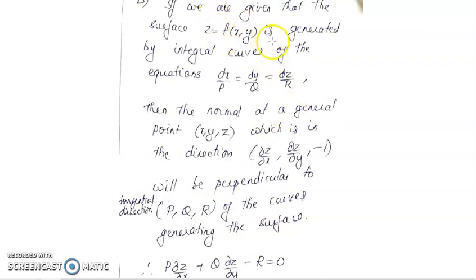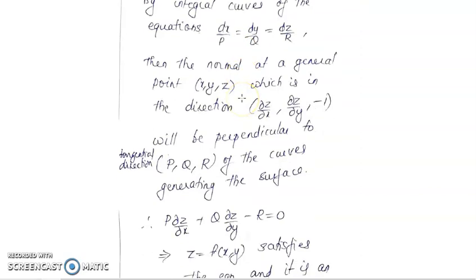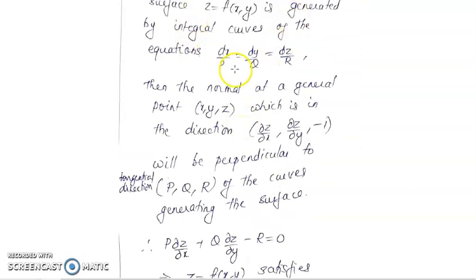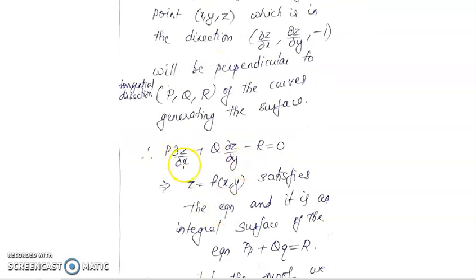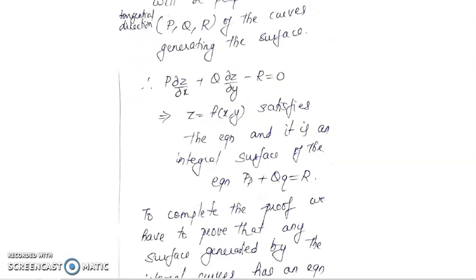Therefore, we will get P·(∂z/∂x) plus Q·(∂z/∂y) minus R equal to 0. So if you have a surface z equal to f(x,y) which is generated by the integral curves of dx/P equal to dy/Q equal to dz/R, then z equal to f(x,y) satisfies the equation P·zx plus Q·zy minus R equal to 0. So z equal to f(x,y) will be an integral surface to the equation Pp plus Qq equal to R.